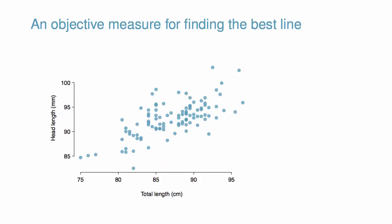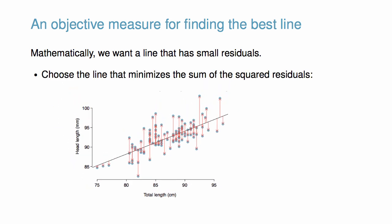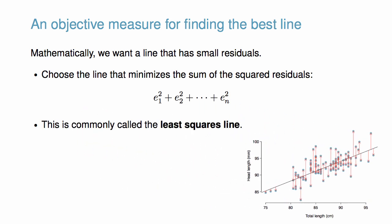We begin by thinking about what we mean by best. Mathematically, we want a line that has small residuals. Remember, residuals are the distances between the line and the data. The most common practice is to choose the line that minimizes the sum of the squared residuals. This is commonly called the least squares line. The least squares line is the most commonly used and it is relatively easy to calculate by hand or with software.